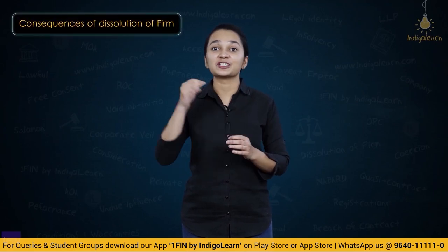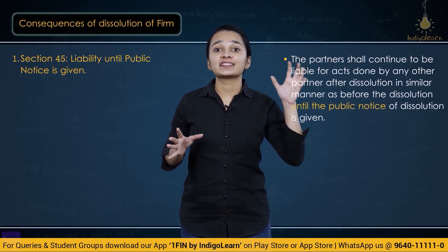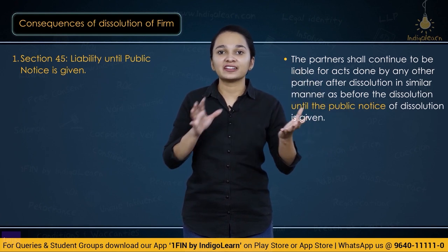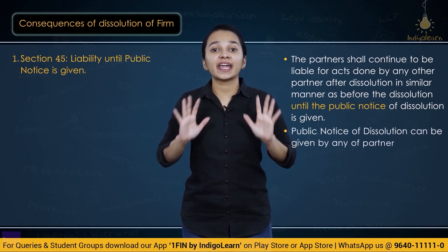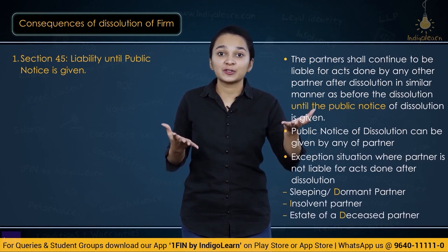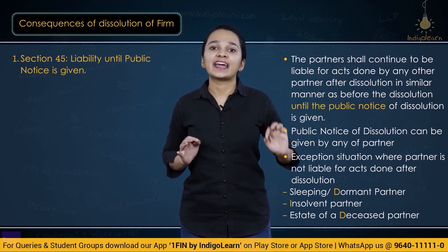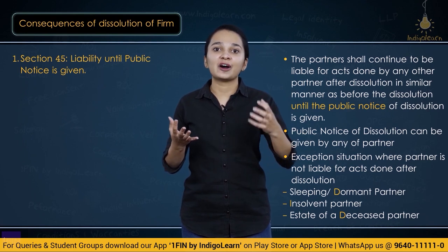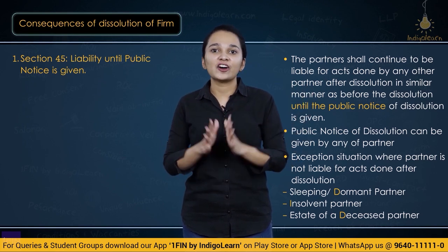The consequences of dissolution of firm: Section 45 — if a partner performs an act after dissolution but without public notice of dissolution, that act will bind the firm. Giving public notice of dissolution is very important. There are certain partners not liable for acts done after dissolution even without public notice, remembered by the acronym DID — Dormant partner, Insolvent partner, and estate of a Deceased partner. These three are not liable for acts of a partner done after dissolution without public notice.